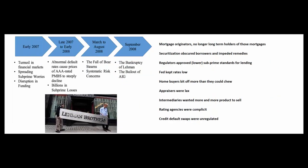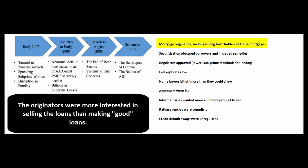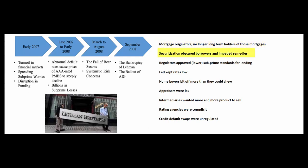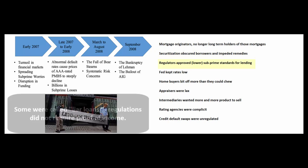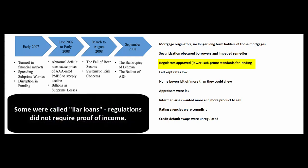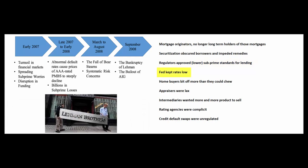In the old days, banks would lend money for homes and hold onto those loans, collecting principal and interest over 30 years. But that changed — loan officers and mortgage brokers were originating loans but not holding them, selling them to other parties. Larger banks pooled these loans and securitized them. Regulators approved much lower lending standards for mortgages, so people didn't need high income to qualify, and the Fed kept rates low.